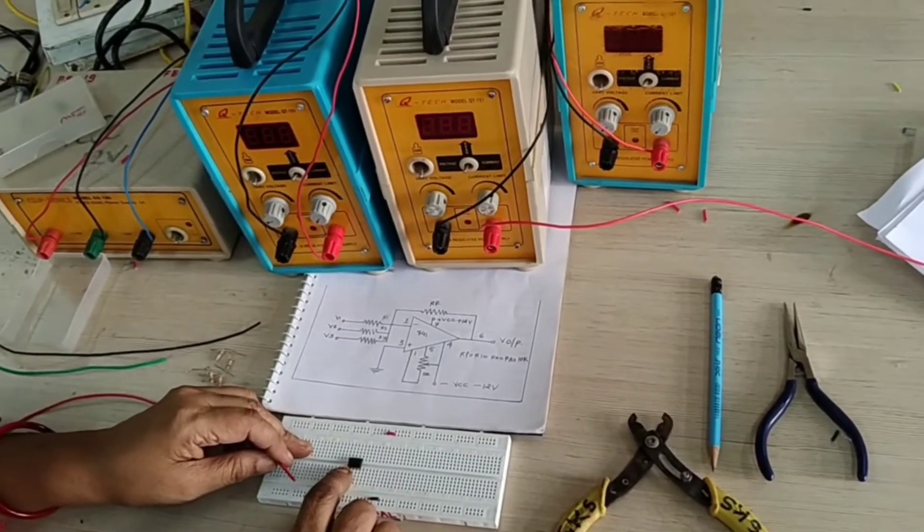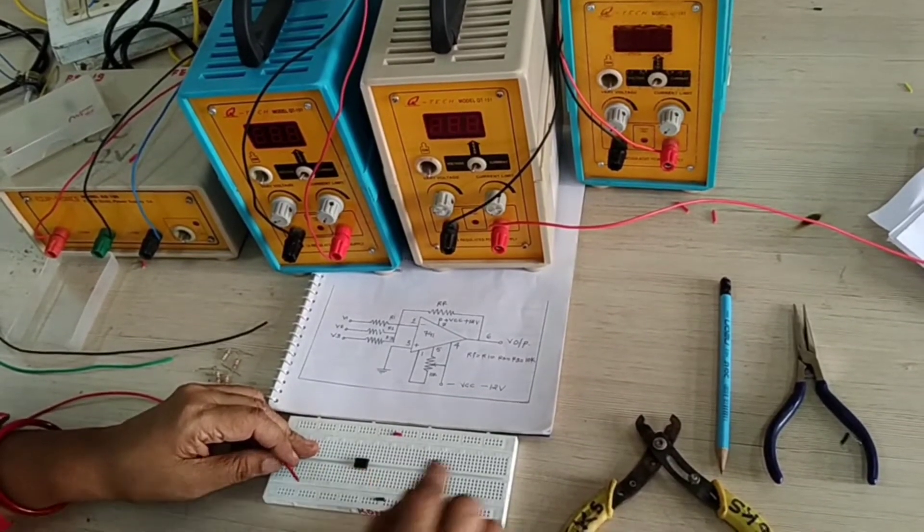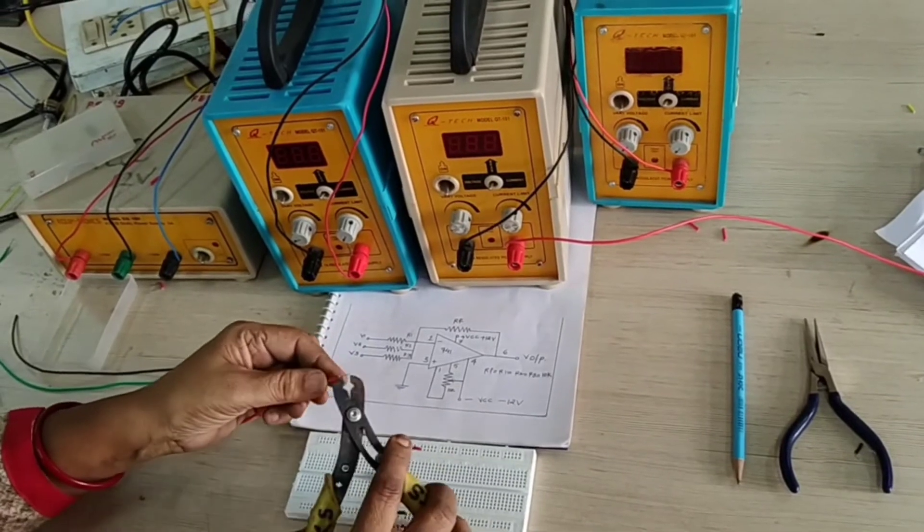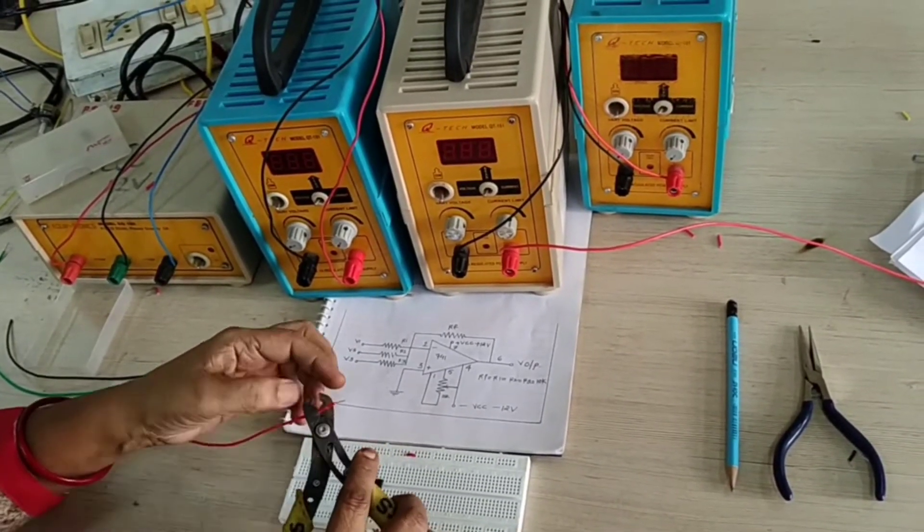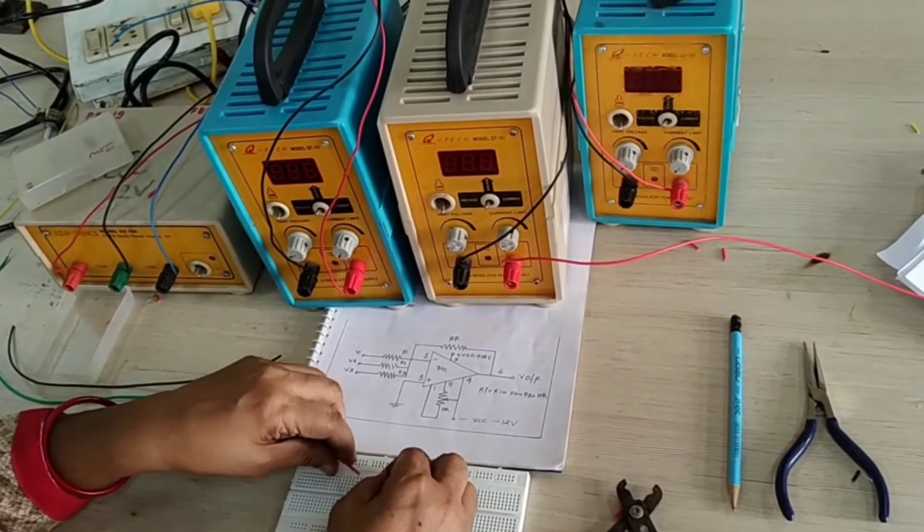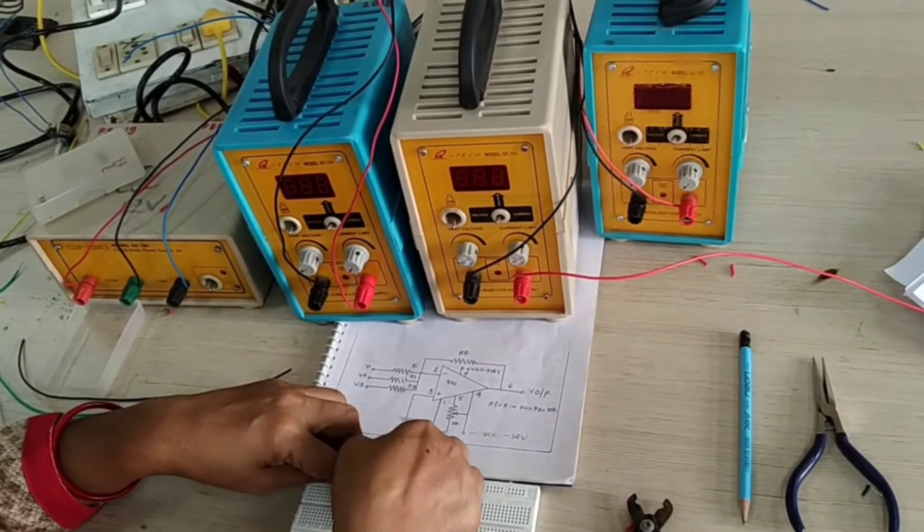Now again see, this is an 8-pin IC, 741. Okay, now see here, pin number 7 is your VCC. Again we are indicating red color of the wire. So red color of the wire, we are connecting pin number 7, VCC.